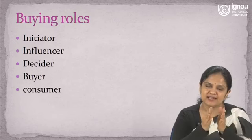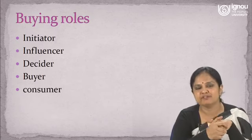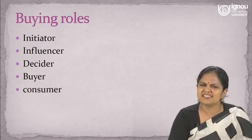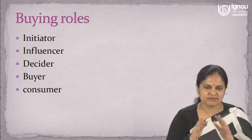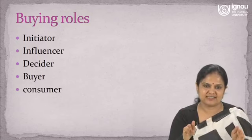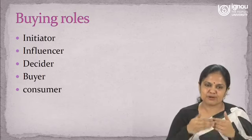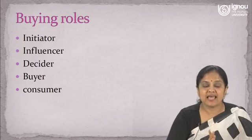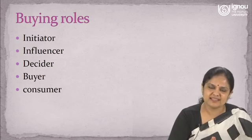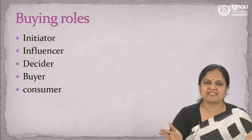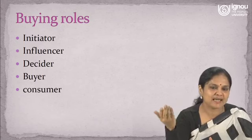This initiator can be your neighbor, family, friend, peer group, colleague, or family members. Then comes the influencer. You discussed it with the neighbor who initiated it, and then your spouse also says it is better if you get a car because even for family outings you need one. So your decision is now being influenced — the need was felt, it was pushed, and now it is being influenced.